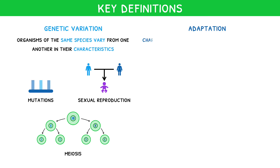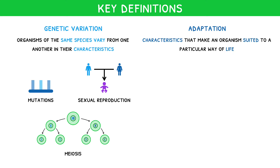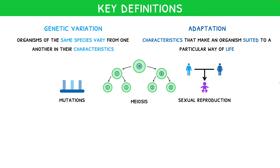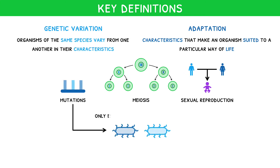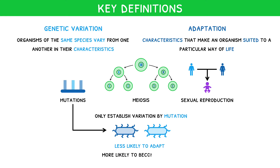Adaptations are characteristics that can make an organism suited to a particular way of life, which have developed slowly over many generations. It is worth noting that since asexual organisms can only establish variation by mutation, they are less likely to be adapted, and so more likely to become extinct.